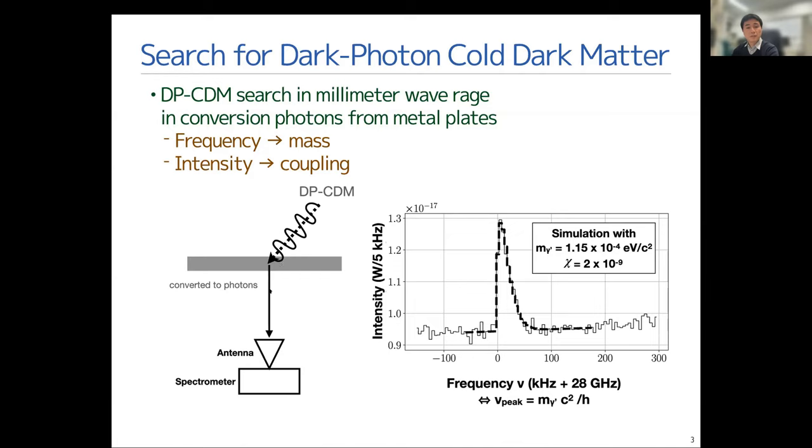We detect those photons in the millimeter wave range, the radio wave with an antenna, and read out the signal with the spectrometer. In that signal of the millimeter wave, its frequency corresponds to the dark photon mass, and the power, the intensity of the radio wave corresponds to the coupling constant chi.